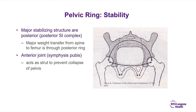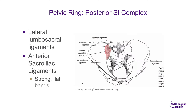Stability through the pelvic ring is mostly through the posterior structures — the posterior SI complex. For that reason, fixation is usually focused on the posterior pelvis first, and anterior ring fractures can often be ignored. The major weight transfer from the spine to the femur and lower extremity is through the posterior ring. The symphysis really only acts as a strut to prevent collapse of the pelvis.